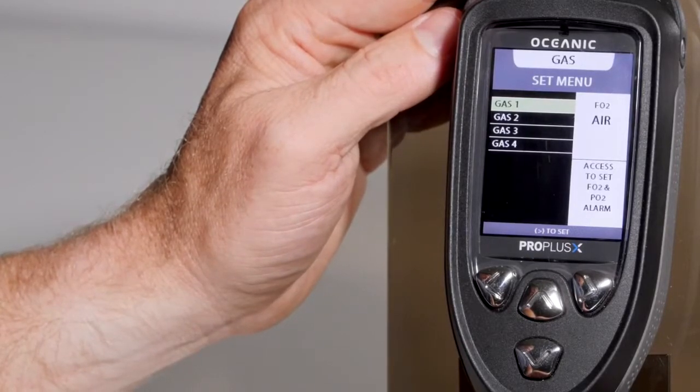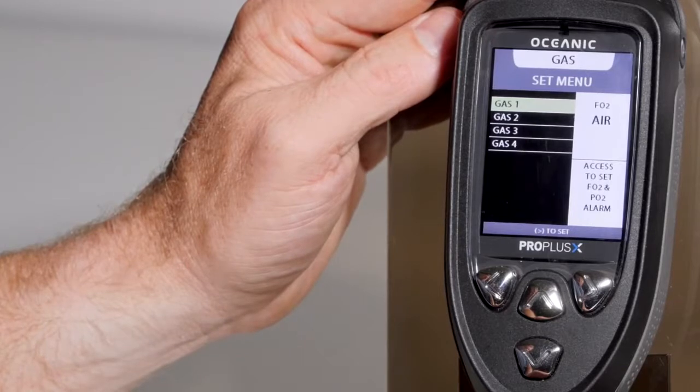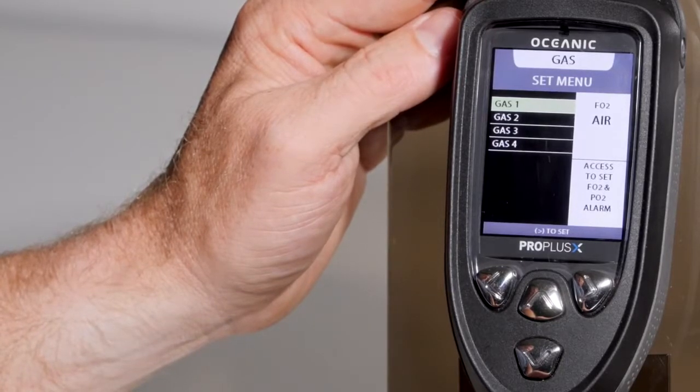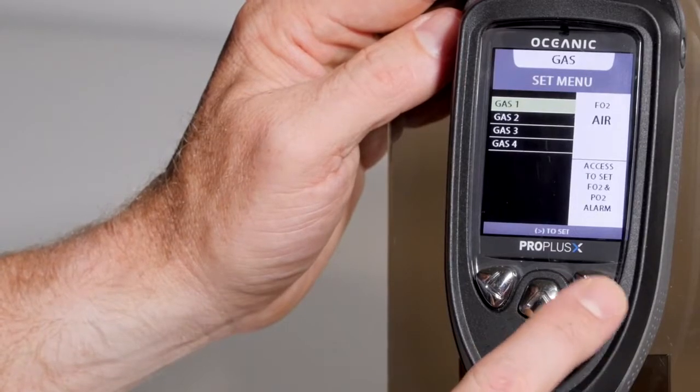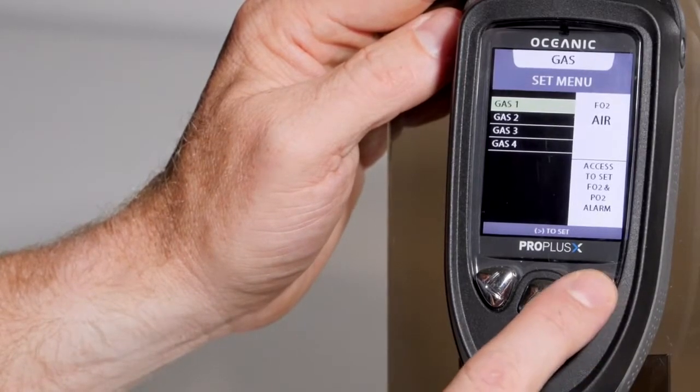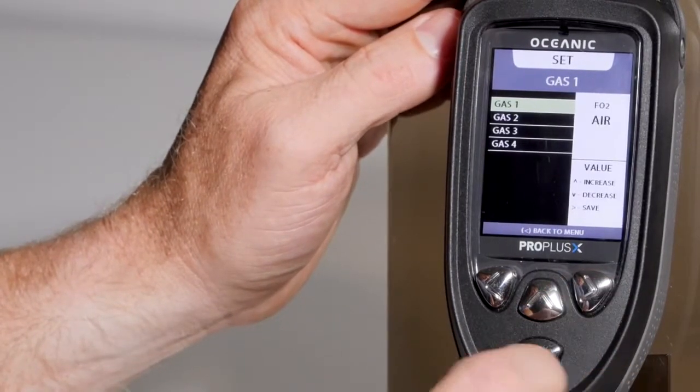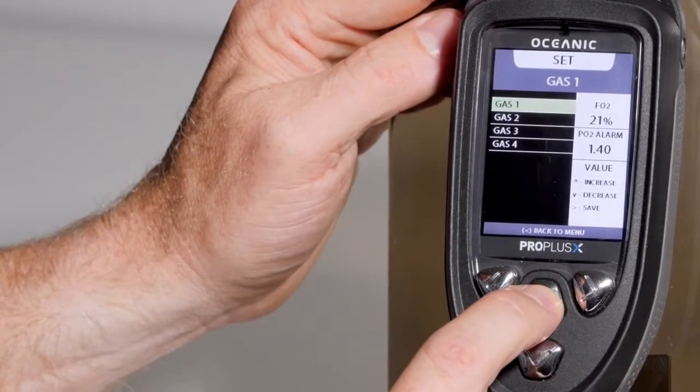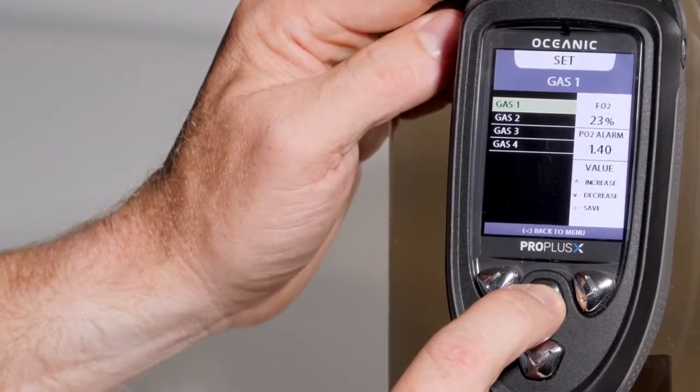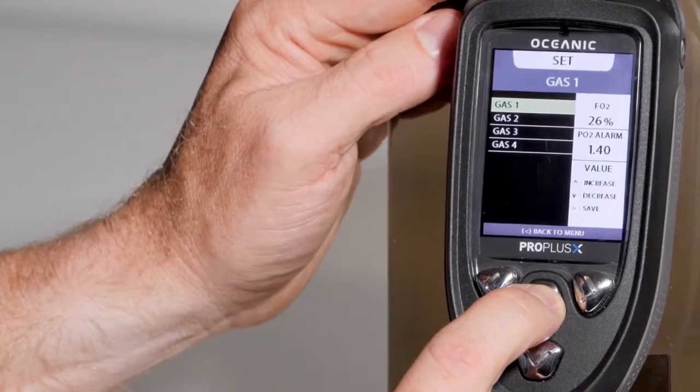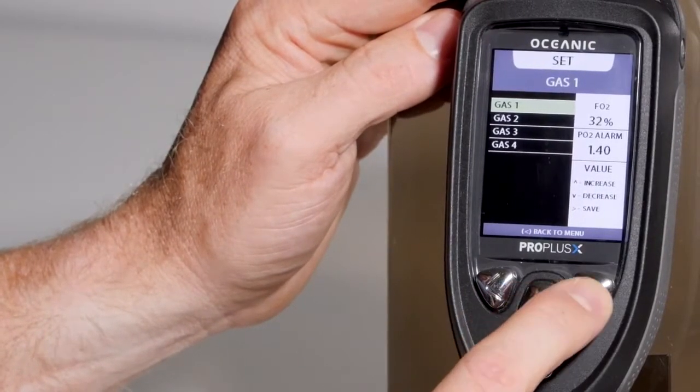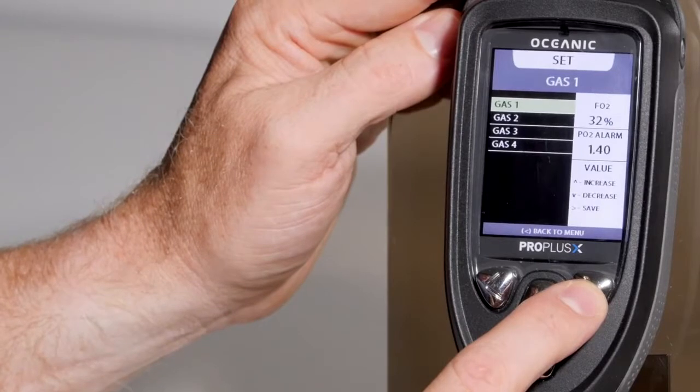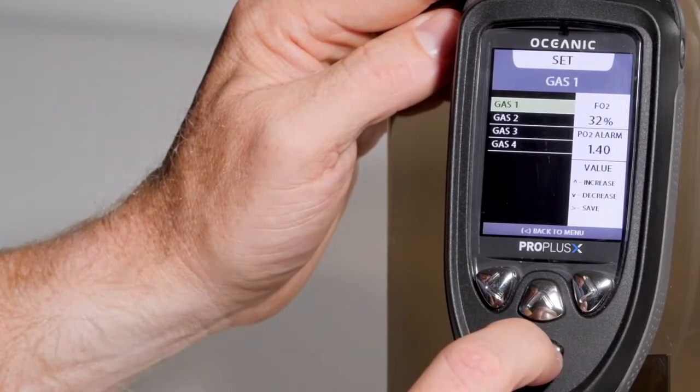Gas 2, 3, and 4 would be for additional cylinders on that dive. If you're using a pony bottle or deco gas, you could set those up. To set gas 1, you would arrow over and change it from air to 21, 22, whatever mix you analyze in your tank. Once you've confirmed the gas, you can set the partial pressure for that gas as well.